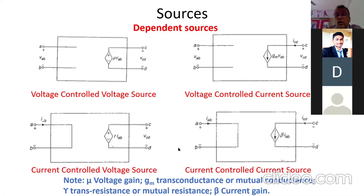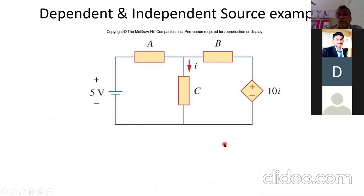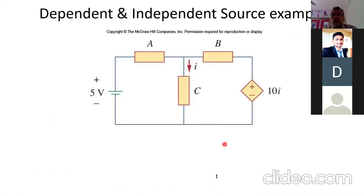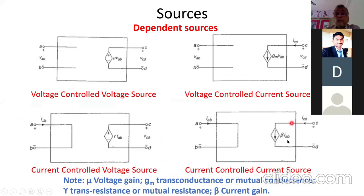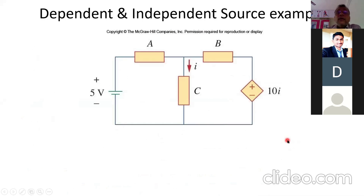The last type is the current controlled current source (CCCS). The current source has magnitude beta times IAB, where beta is the current gain (a constant) and IAB is the current through terminal A-B. This IAB controls the current flowing through terminal C-D.